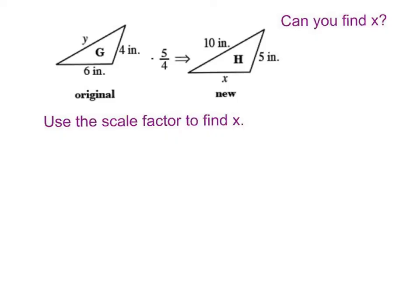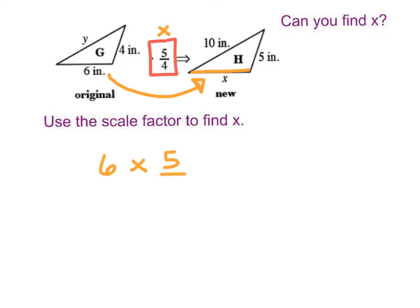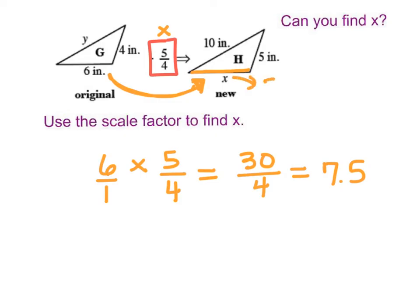Now we're going to use scale factors to find missing sides in similar figures. These two triangles are similar and the scale factor is 5/4 — going from triangle G to triangle H. I want to find the missing side length x. So I do 6 times the scale factor 5/4: putting a 1 under the 6 and multiplying across — 6 times 5 is 30, and 1 times 4 is 4. Then 30 divided by 4 gives 7.5. So this side is 7.5 inches.